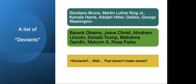Barack Obama, Jesus Christ, Abraham Lincoln, Donald Trump, Mahatma Gandhi, Malcolm X, Rosa Parks — these are all deviants. George Washington helped establish the United States. Barack Obama was the first African-American president. Jesus Christ is the religious icon of Christianity. Gandhi protested through hunger strikes. Malcolm X, Rosa Parks — they were all arrested. How can these people be deviants? As I said, deviance isn't a simple dichotomy. So let's go into what deviance means.